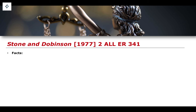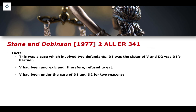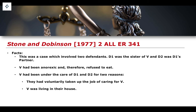The first is the 1977 case of Stone and Dobinson. It involved two defendants: D1 was the sister of the victim, and D2 was the partner of D1. The victim was anorexic and, as a result, had refused to eat — they suffered from the eating disorder anorexia. The victim had also been under the care of both defendants for two major reasons: they had voluntarily taken up the job of caring for the victim, and the victim was also living in their house. All three of them were living in the same house, and the defendants had voluntarily taken up the job of caring for the victim.